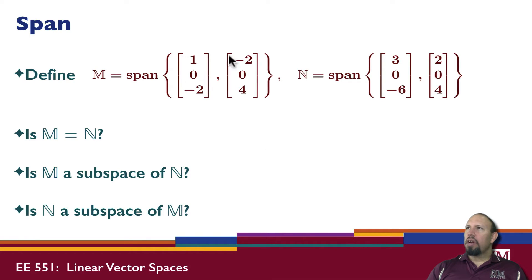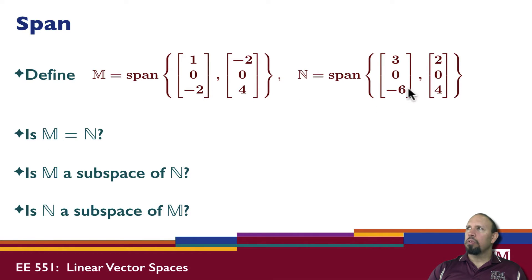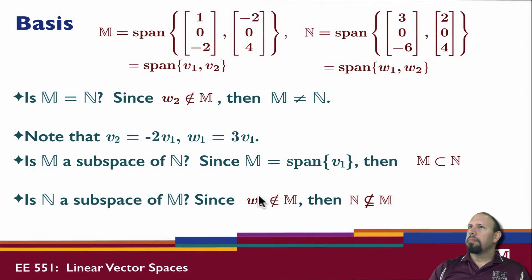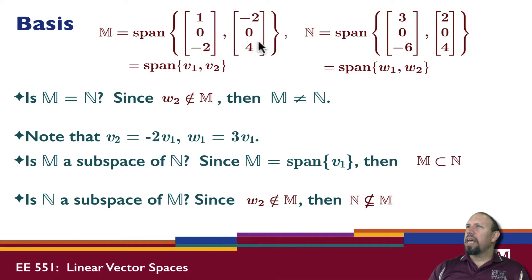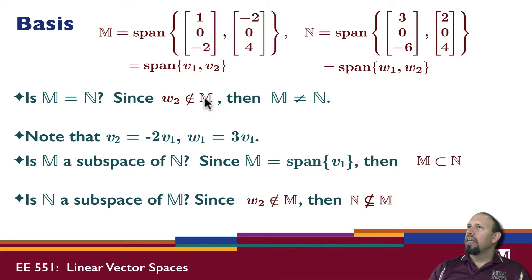Now about span: M is the span of some vectors and N is the span of two other vectors. The questions are: is M equal to N, is M a subspace of N, and is N a subspace of M? Since W2 is not in M, these two sets cannot be equal to each other.